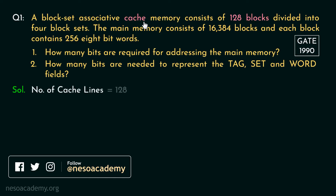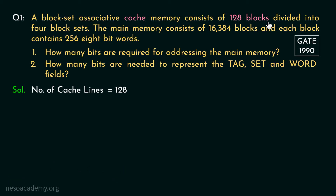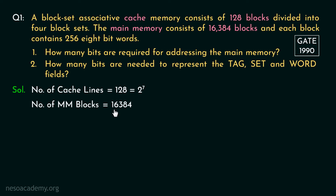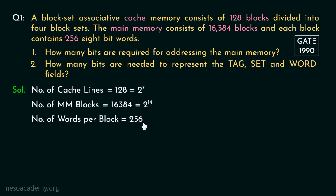The cache memory is given as 128 blocks. We already know the block and the line are sometimes used interchangeably, so the number of cache lines is 128, which can also be written as 2 to the power 7. Similarly, the main memory consists of 16384 blocks, which is 2 to the power 14. The problem statement mentions each block contains 256 words, and every word size is 8-bit, meaning every word is 1 byte in size.